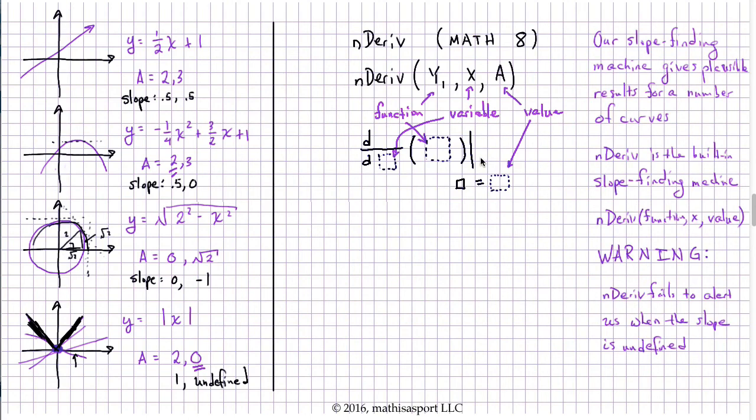So what have we learned? Well, first I wanted to go back just a second to emphasize something, and that is I only showed two examples: this parabola at two and this absolute value function at zero. But you can go through each of the cases that we did with our own slope finding machine and get the equivalent results using nDeriv. And I'd encourage you again to put in the practice that will lead to really learning this concept.